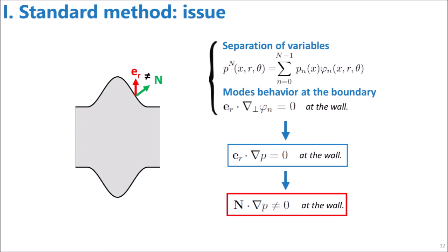This issue is that if we combine the separation of variables and the modes behavior at the boundary, we find out that the pressure field can never truly satisfy the boundary condition with a finite number of modes. And numerically, the number of modes is always finite. Indeed, a combination of standard modes will always give a pressure gradient that is normal to the radial direction. But in a variable radius waveguide, the radial direction is not the normal direction which determines the true boundary condition. This phenomenon is responsible for a slow convergence of the method, but we explain in the next section how it can be overcome.